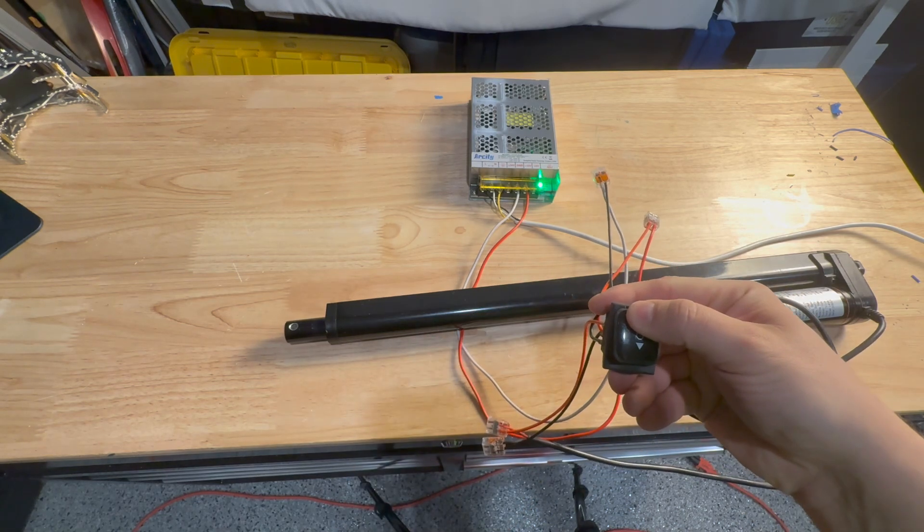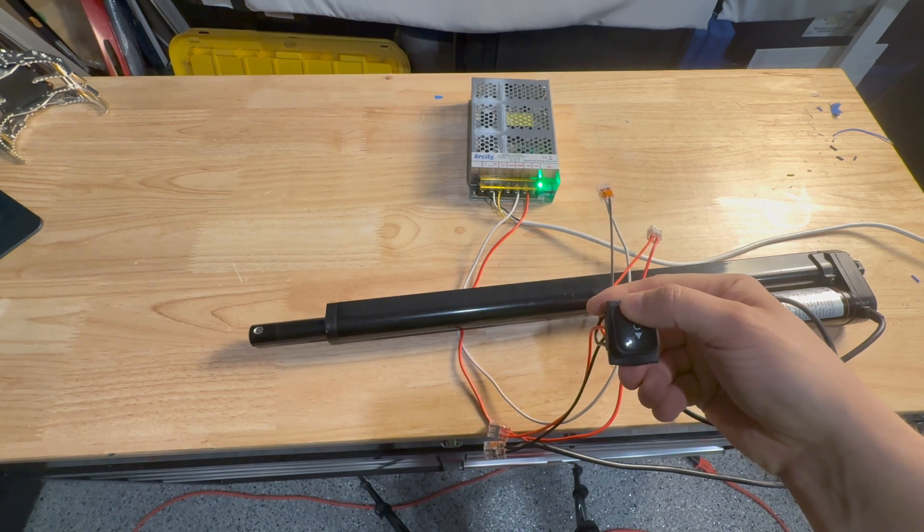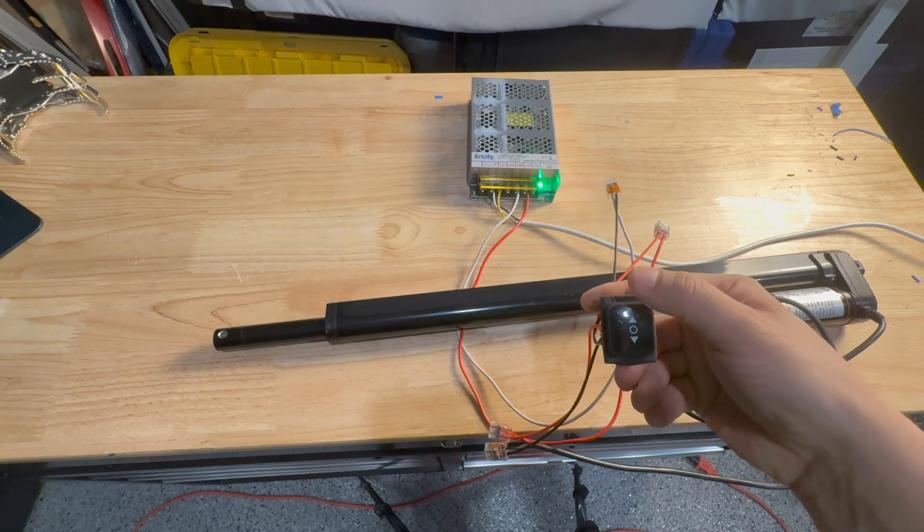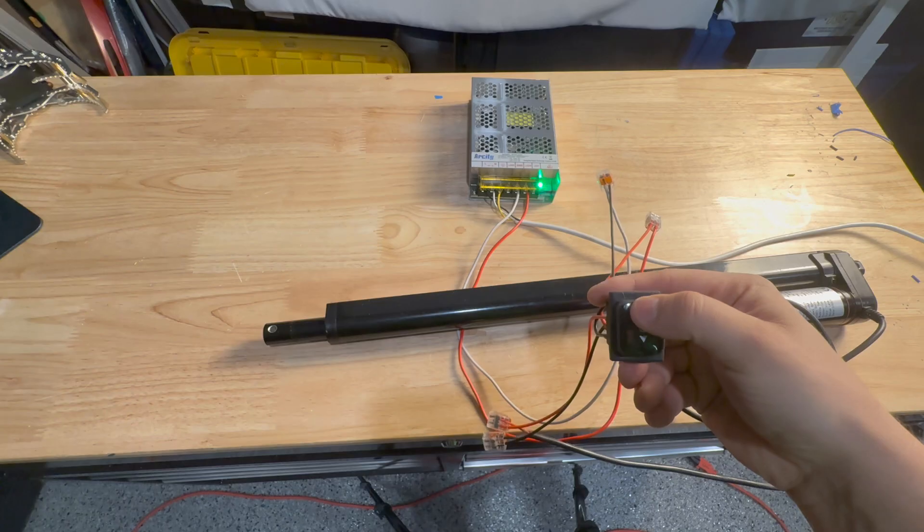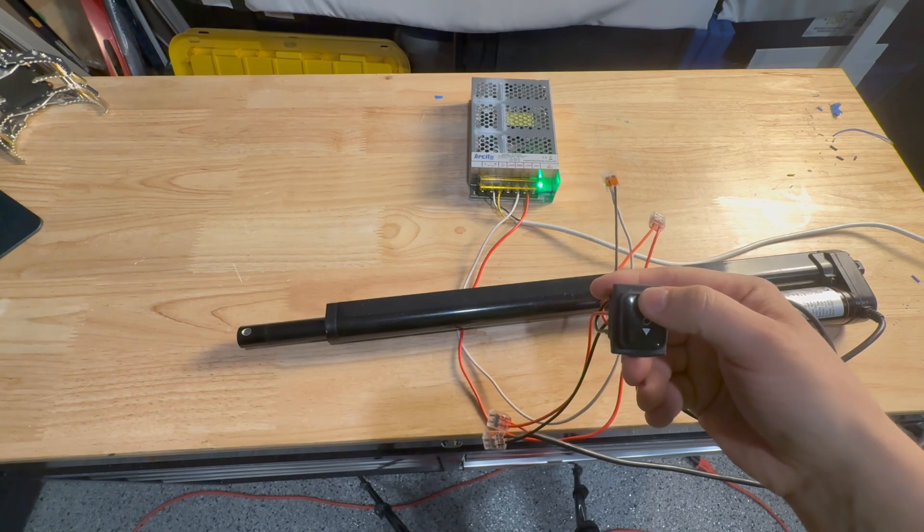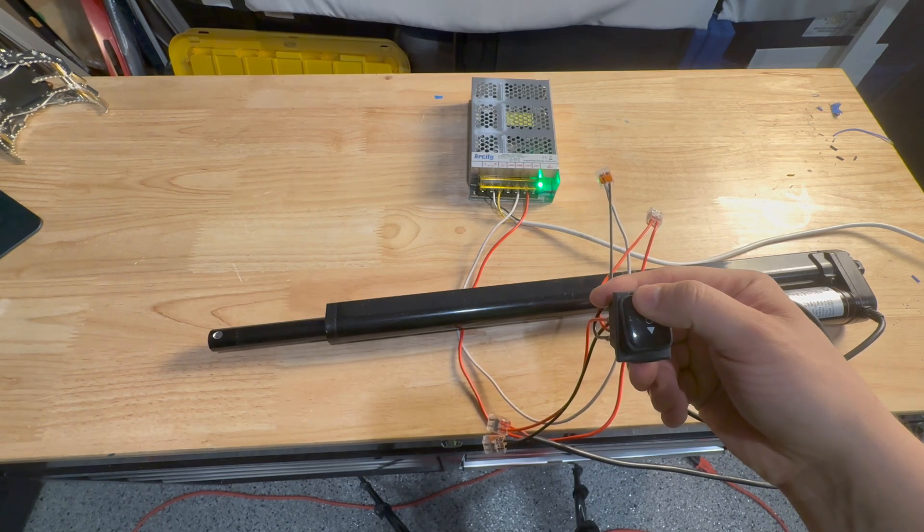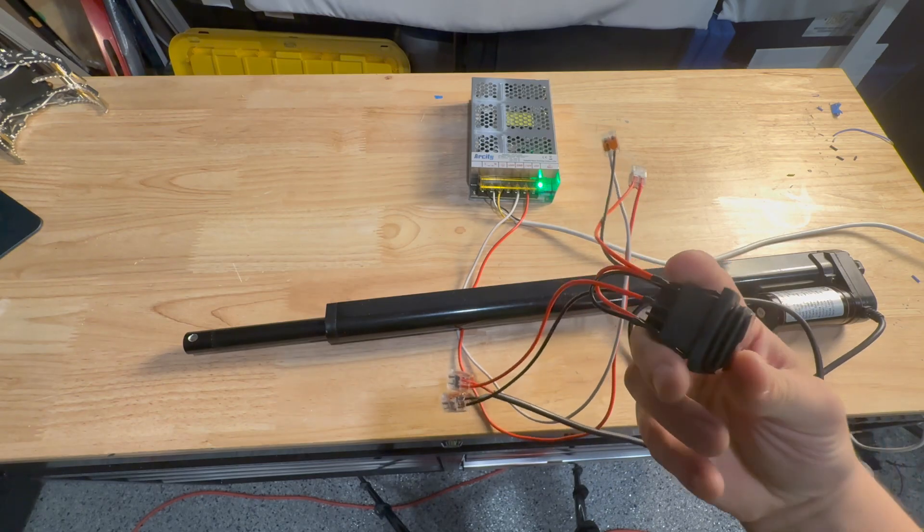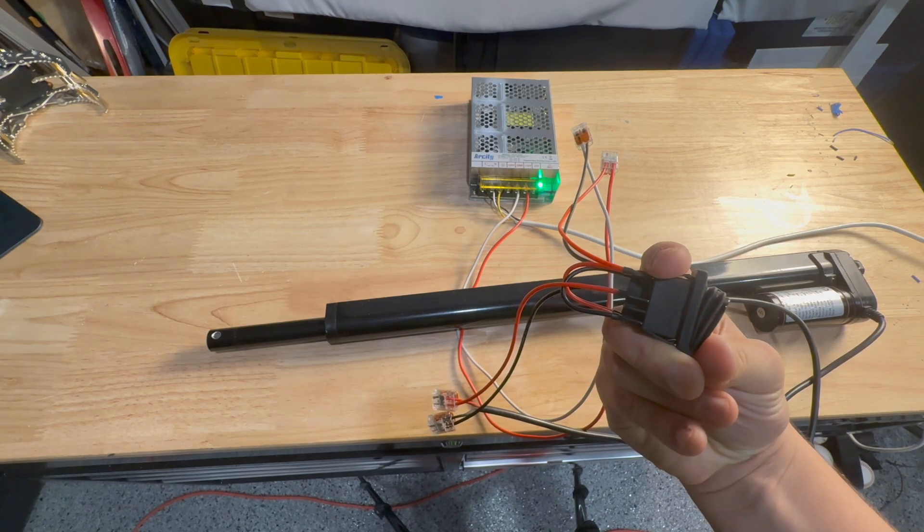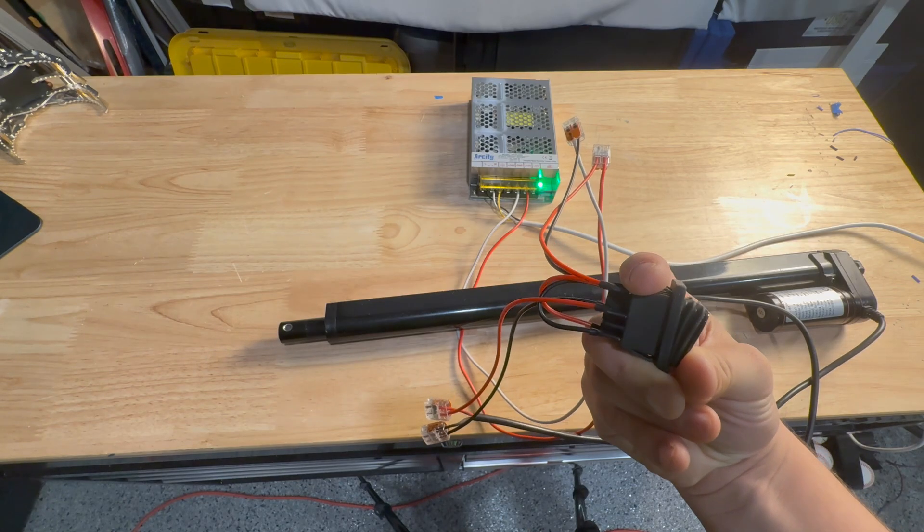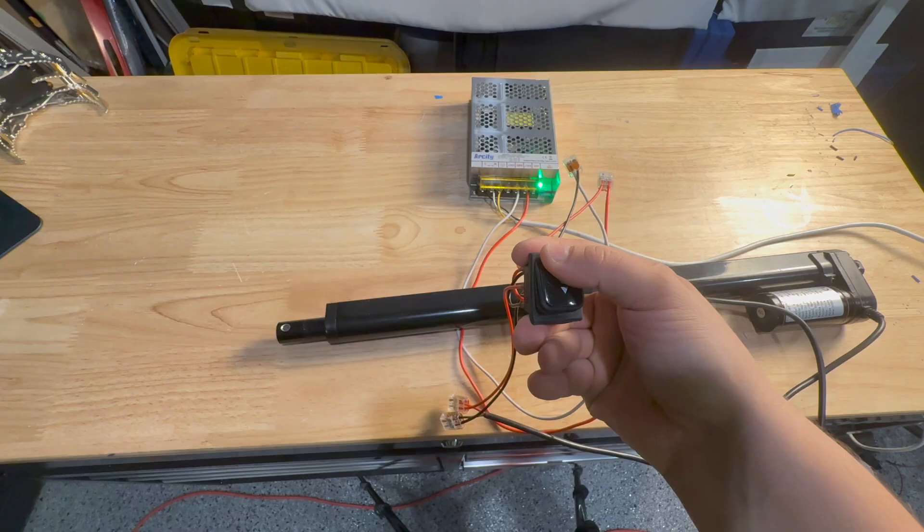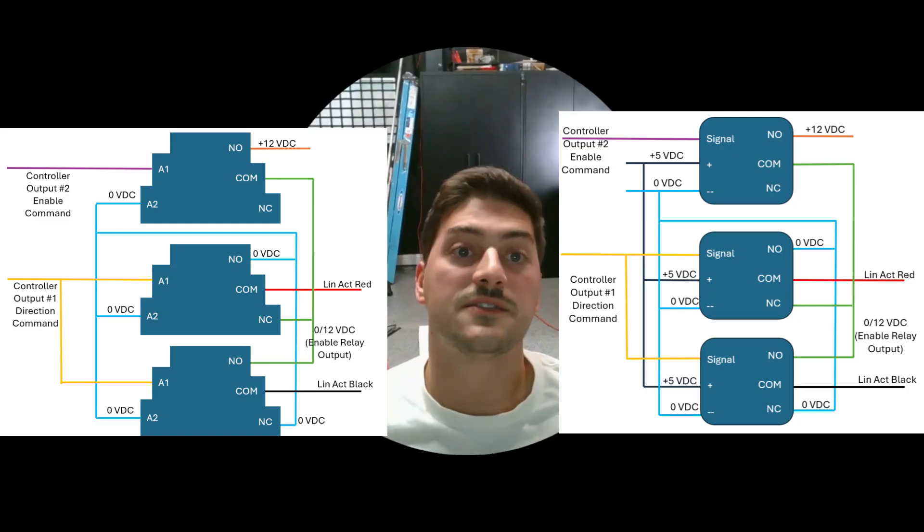A linear actuator is a very strong and common way to achieve linear motion from a simple DC motor. They come in all sizes and can be found in every factory in the world, but also in household objects like automated recliners. Because they typically use 12 or 24 volt DC, and the majority of actuators are controlled by just two wires, you need to design your electronics to control the actuator for your specific needs.